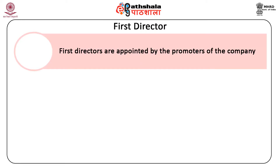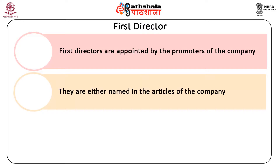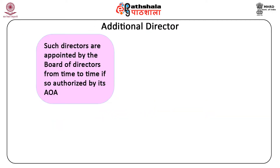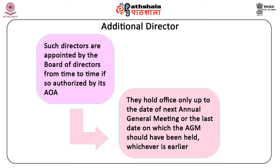First directors are appointed by the promoters of the company immediately after the incorporation of the company. They are either named in the articles of the company, or if the articles are silent, the subscribers to the memorandum of association who are individuals become the first directors. Additional directors are appointed by the board of directors from time to time if so authorized by its articles of association. They hold office only up to the date of the next annual general meeting or the last date on which the AGM should have been held, whichever is earlier.